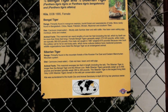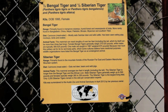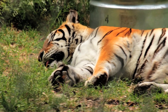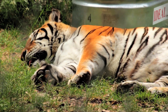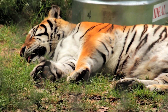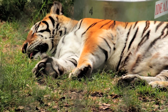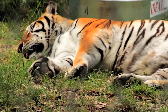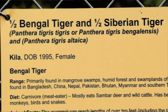I also saw this sign, which confused me. The sign says that the tiger in question, seen here, which to me just looks like a normal tiger, is half Bengal tiger, half Siberian tiger — or in zoological nomenclature, half Panthera tigris tigris, half Panthera tigris Altaica.